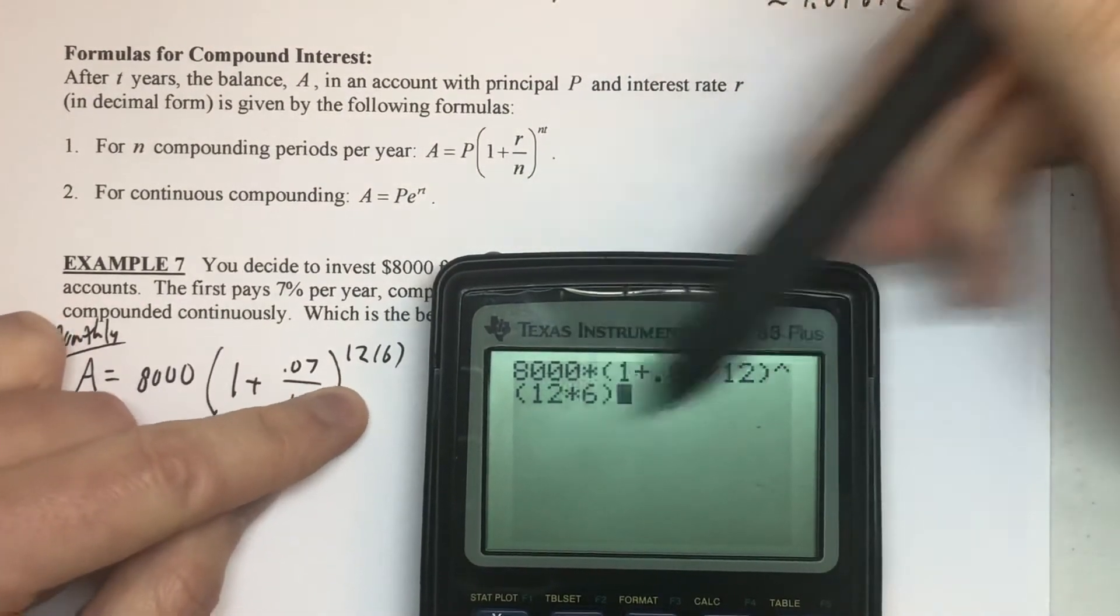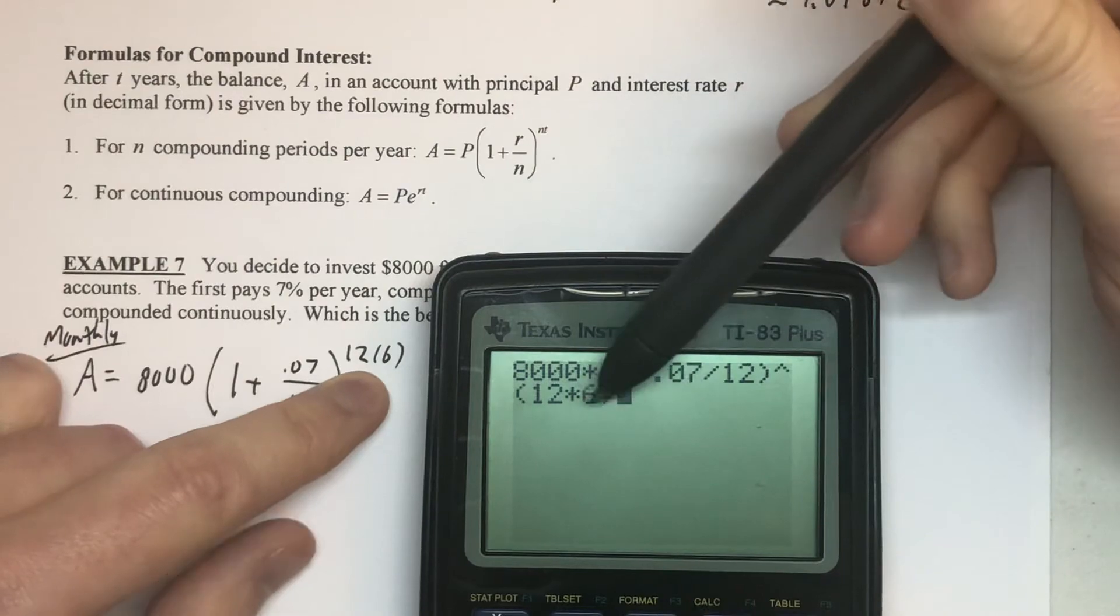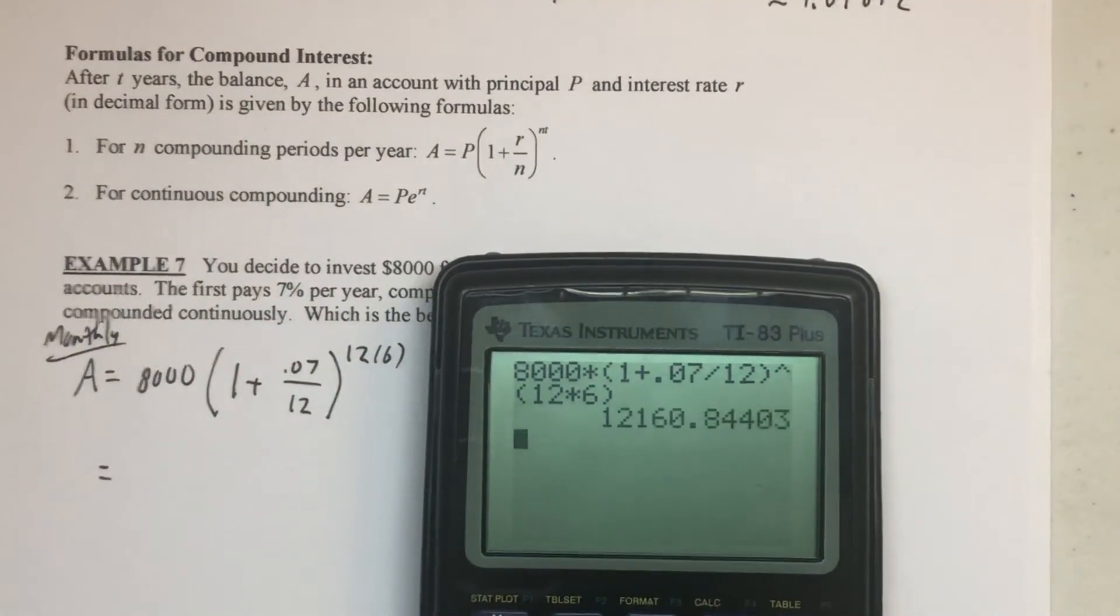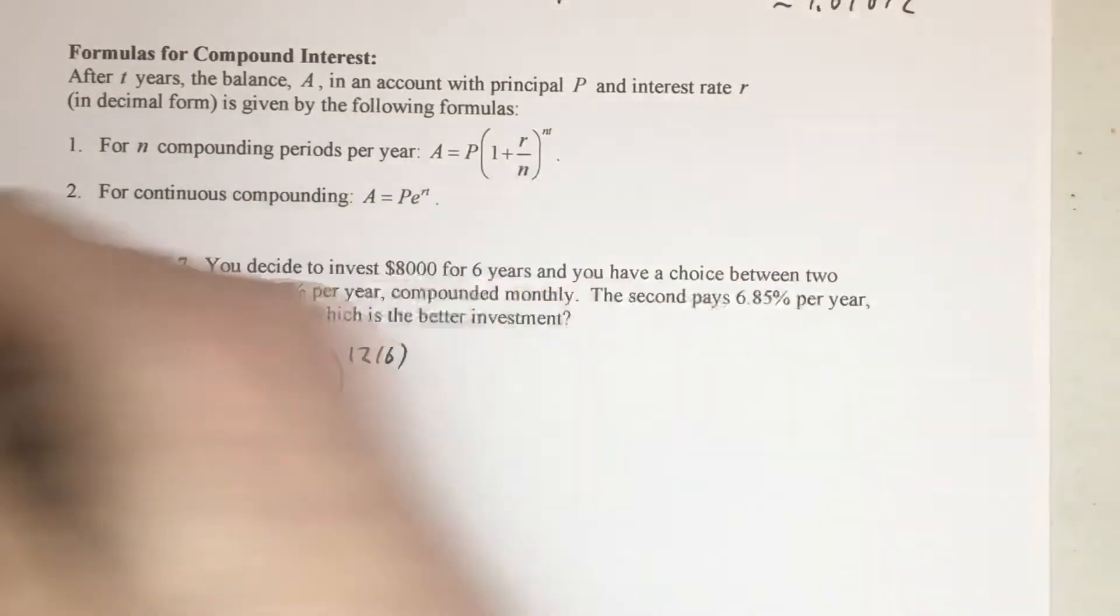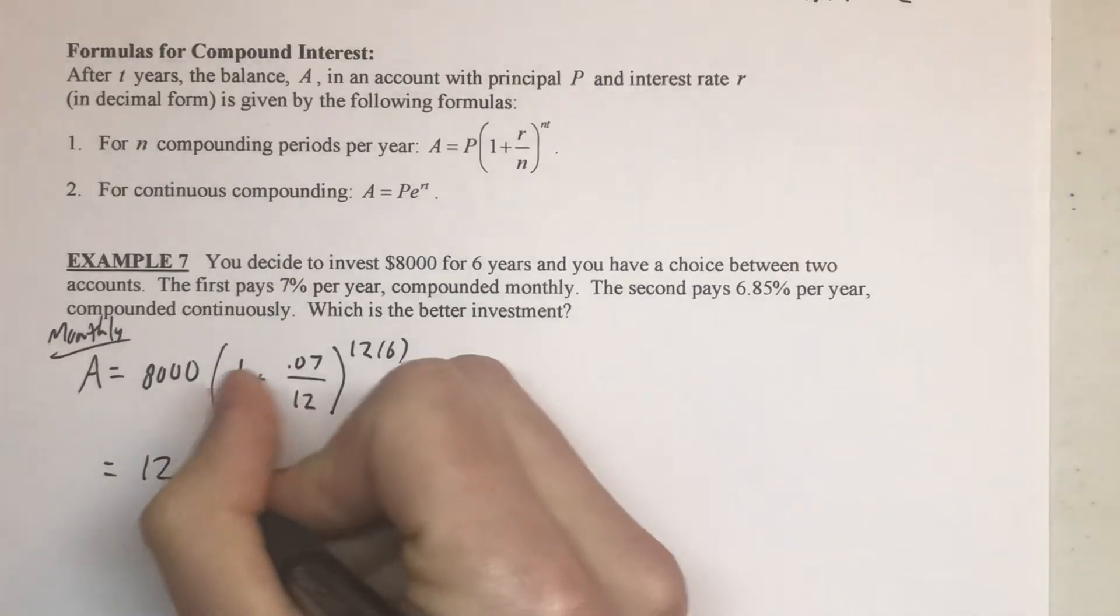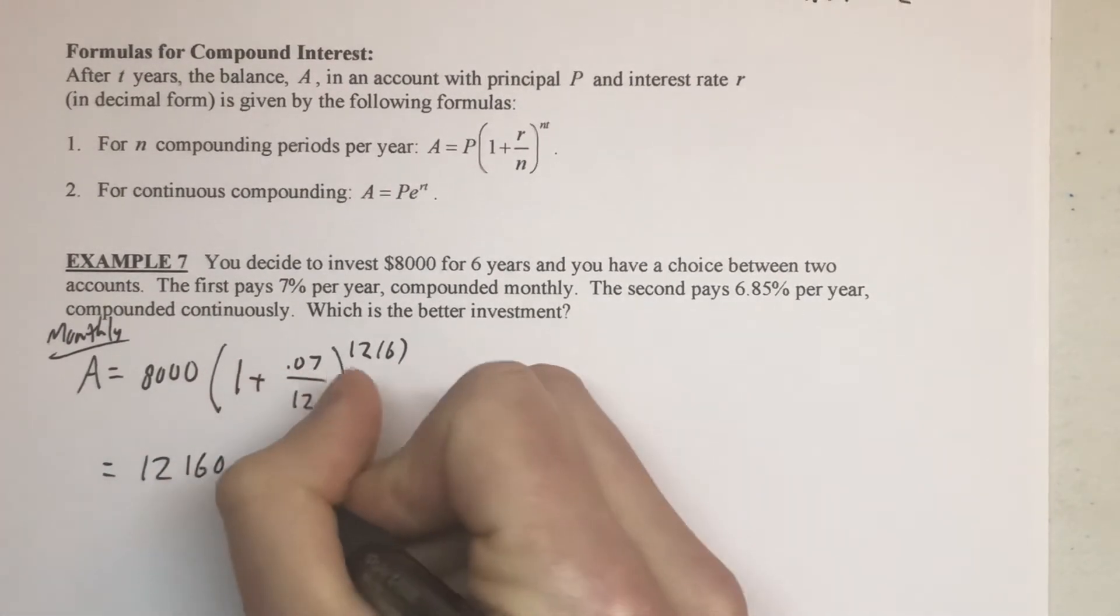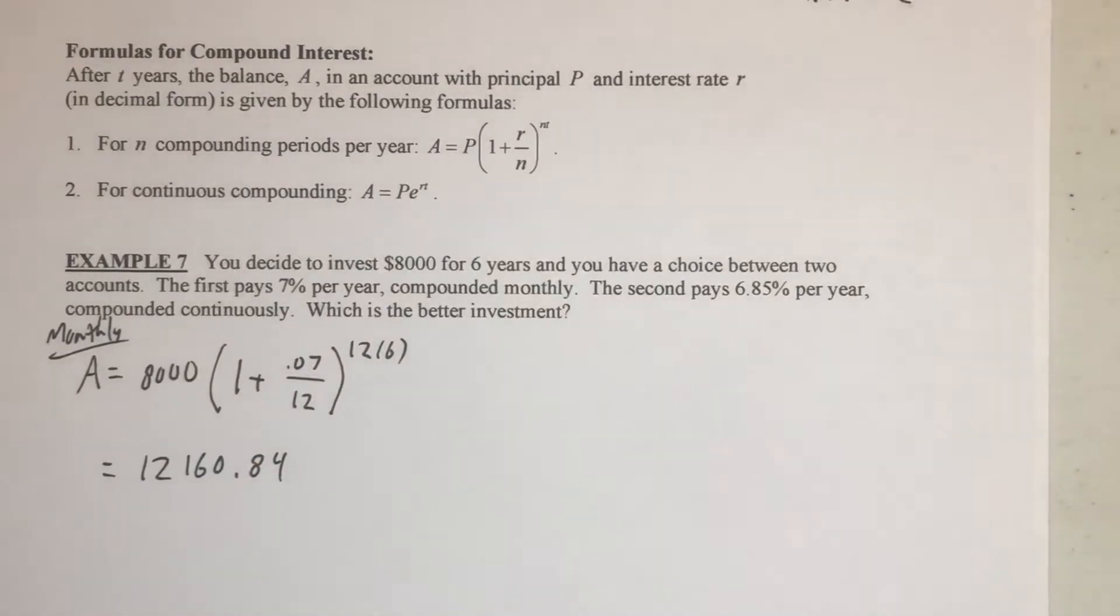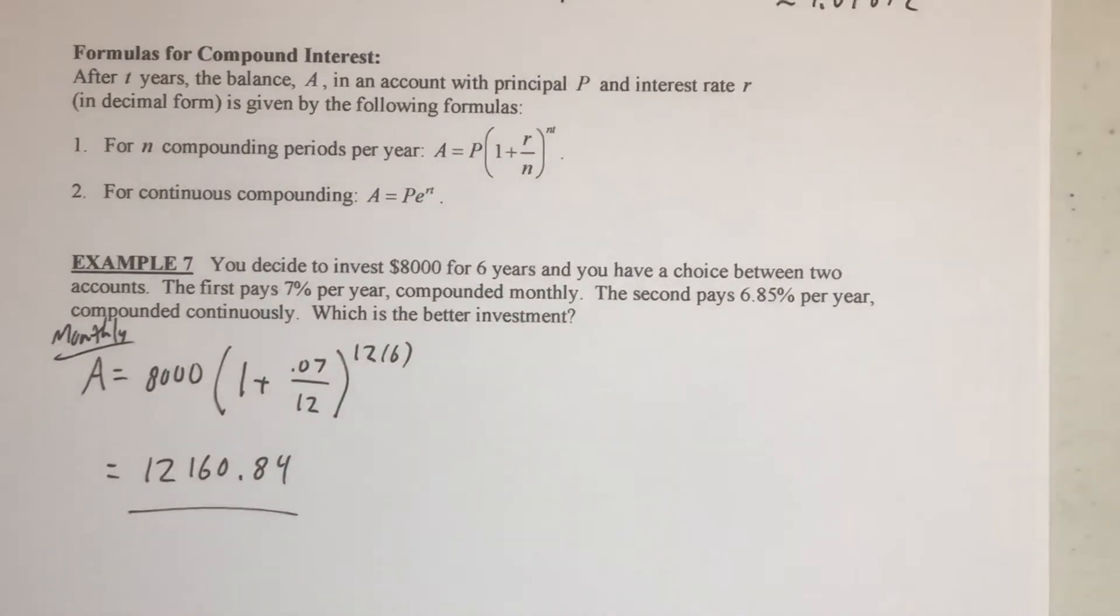Now, you could certainly just write 72 if you wanted to here. It's not that big a number, but I want to show you how the formula would look if we entered it, and I'll hit enter, and it looks like that particular account would end us up at $12,160, and we'll go ahead and round to the nearest cent, so 84 cents. That would be the balance for the monthly.